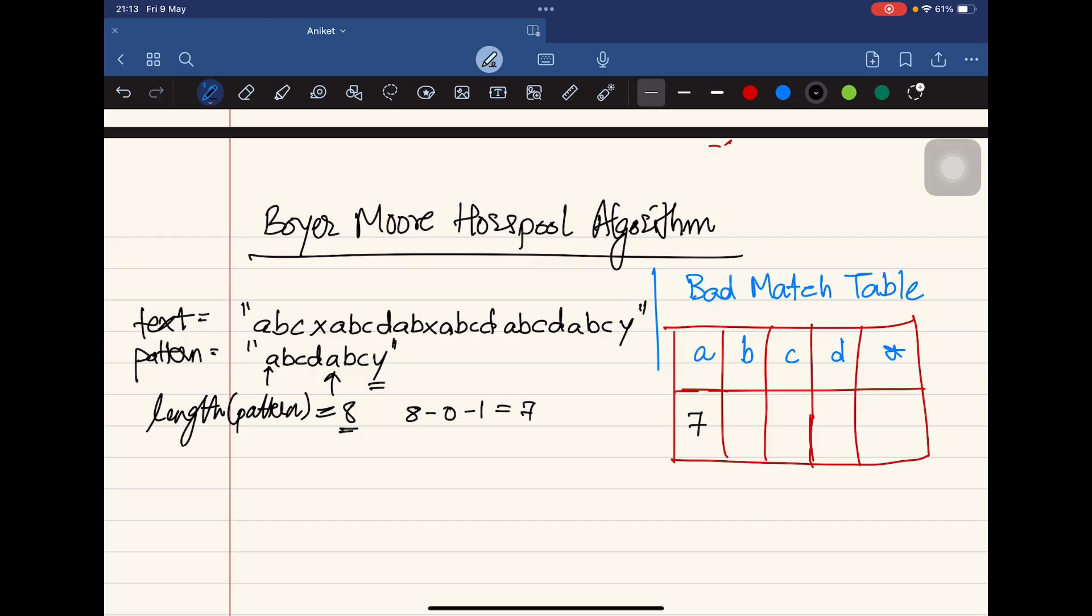Similarly we will do for B also. So 8 minus 1 minus 1 is 6. This is going to be 6. Now we go for C: 8 minus 2 minus 1, which is 5. For D again we do the same thing, that's 4. The star becomes the length of the pattern, which is 8.